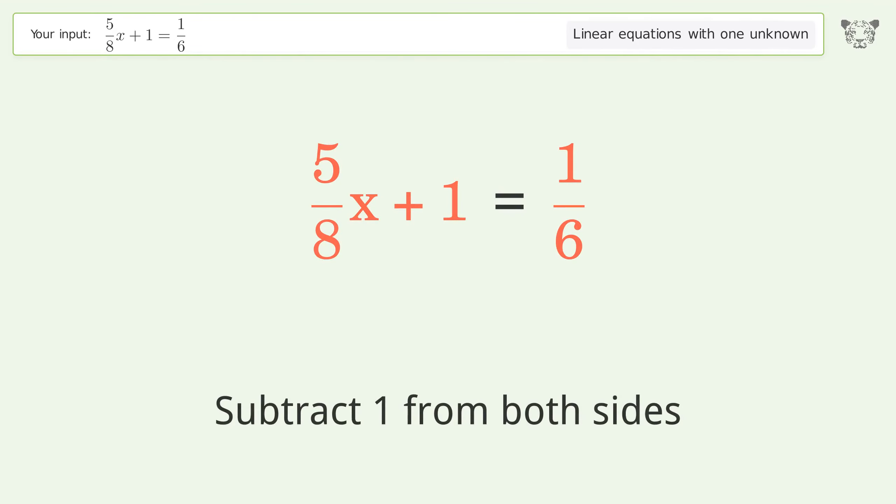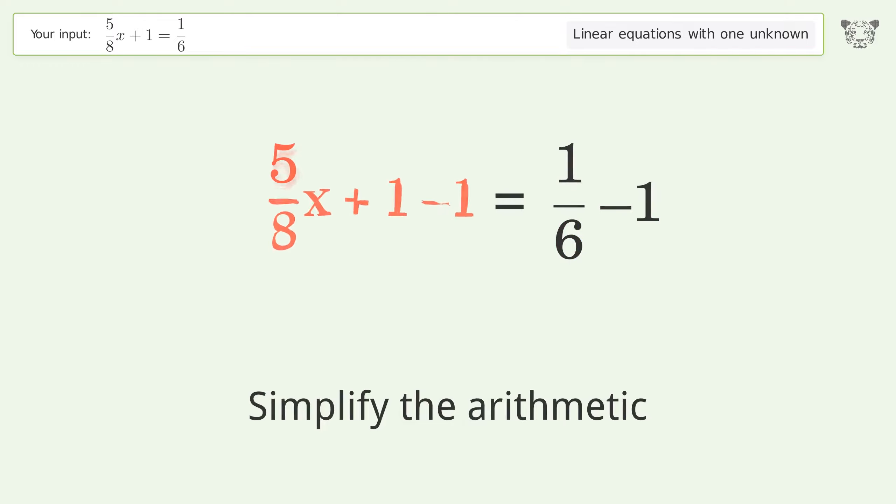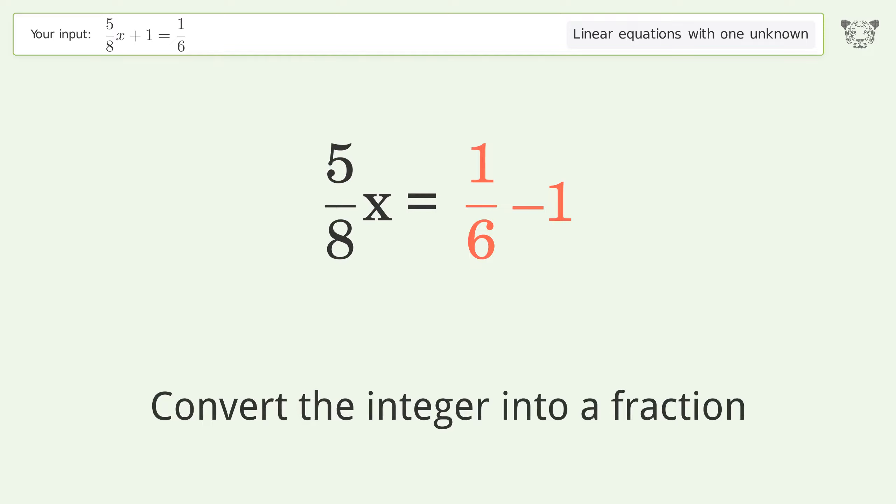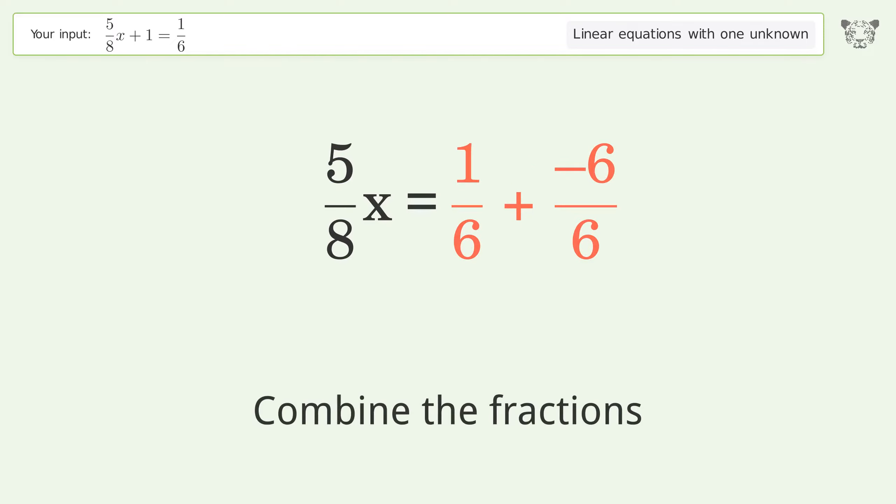1 from both sides. Simplify the arithmetic. Convert the integer into a fraction. Combine the fractions. Combine the numerators.